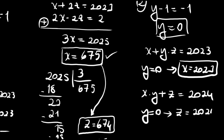So our second solution is x equals 2023, y equals 0, and z equals 2024.